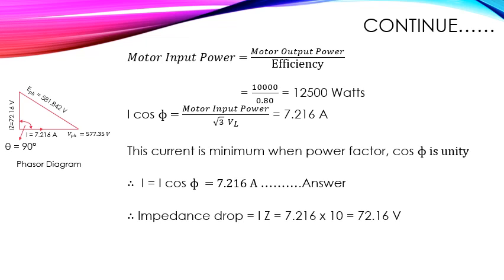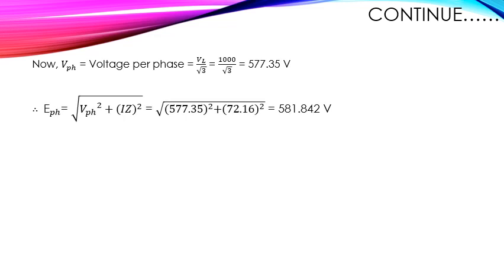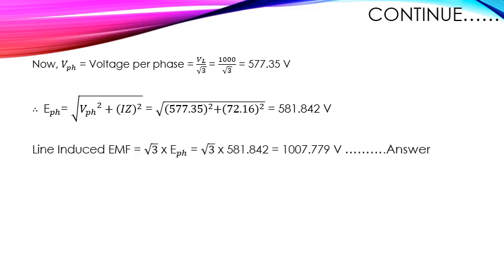The induced EMF per phase Eph = √(Vph² + (I·Xs)²) = √(577.35² + 72.16²). The line induced EMF EL = √3 × Eph. Substituting the calculated Eph gives the line induced EMF, which is the answer.